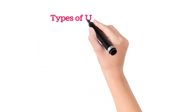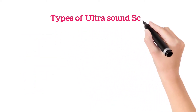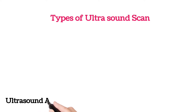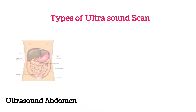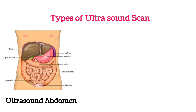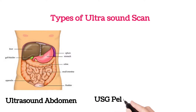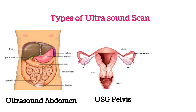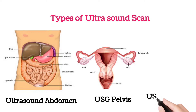Various types of ultrasound scans are there, like USG abdomen, which is used to detect the liver, gallbladder, pancreas, kidneys, and spleen. Whereas USG pelvis is used to detect the female and male reproductive organs like uterus, ovary, and urinary system like urinary bladder.